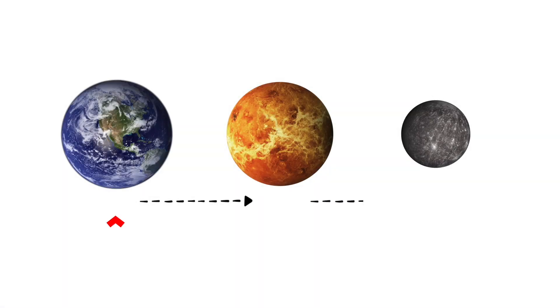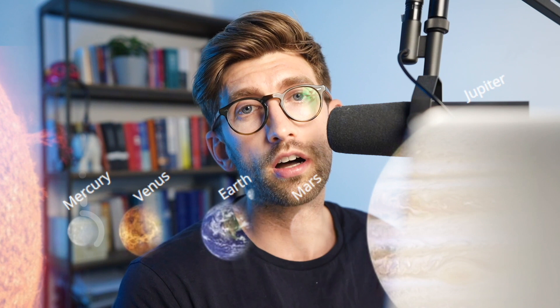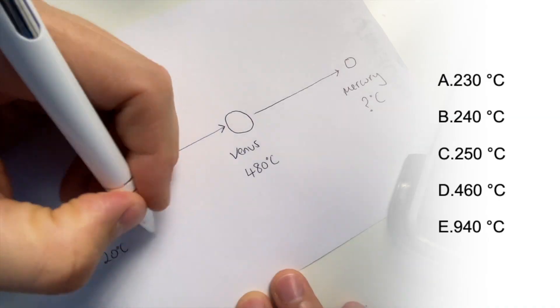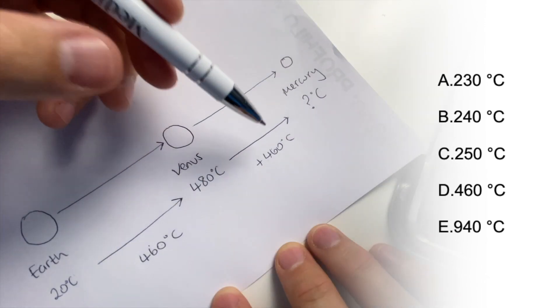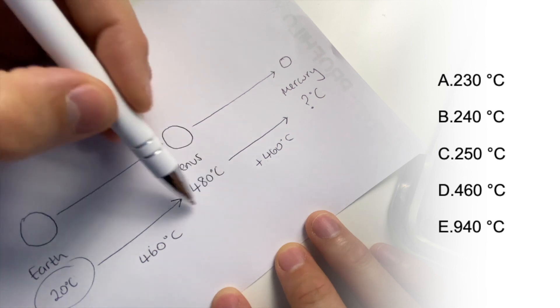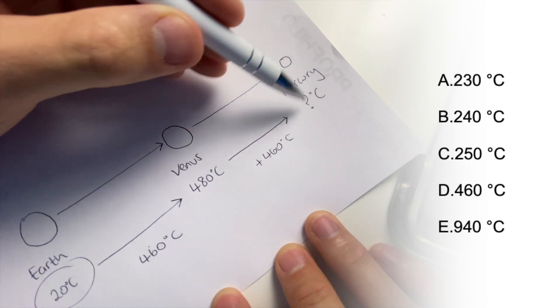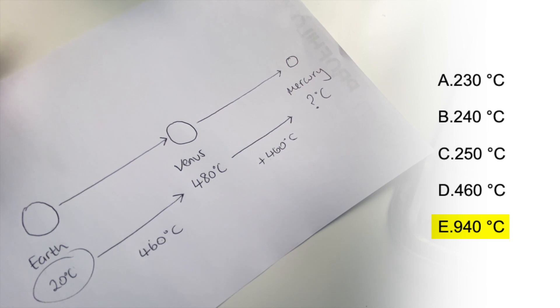Essentially, what we're doing here is working out the gap between Earth and Venus and then adding that onto the distance between Venus and Mercury to give us the total temperature on Mercury. This is where the question is a little bit naughty because you know that Mercury is close to the Sun and therefore going to be hotter — that does help give you a clue using outside knowledge, but normally we don't use that. The way to do this is either that you know both halves are 460, so you do 460 times 2 which is 920, plus the original 20, which gives you 940. Or you know that it's 480 and the difference is 460, so 480 plus 460 is 940. That gives you the final answer, which we know from the questions is E.